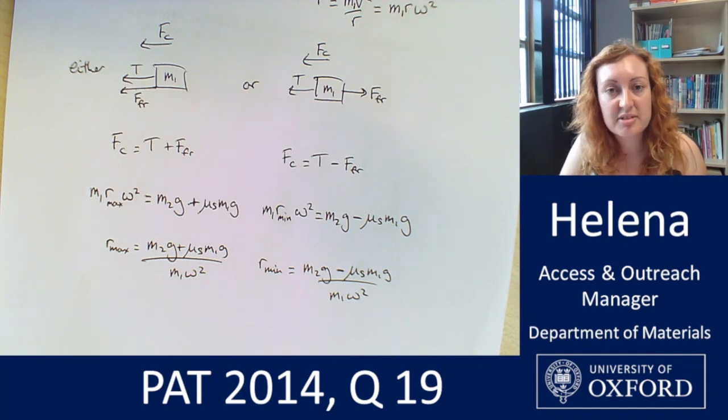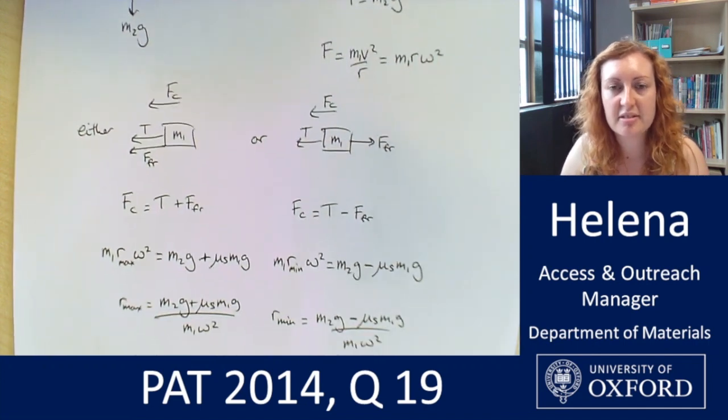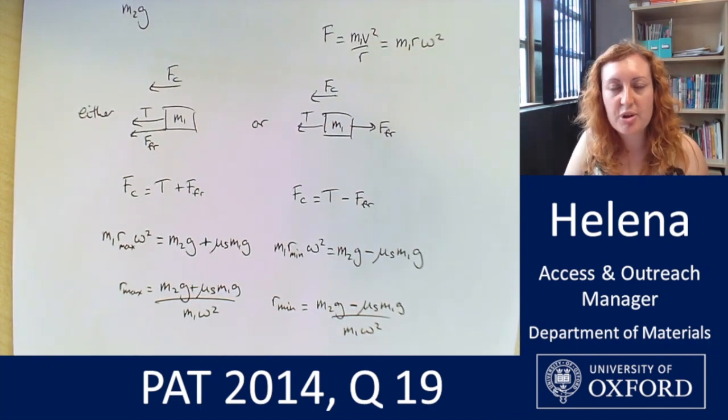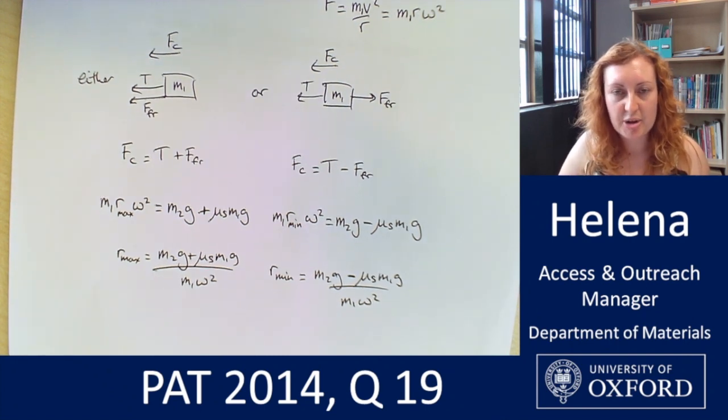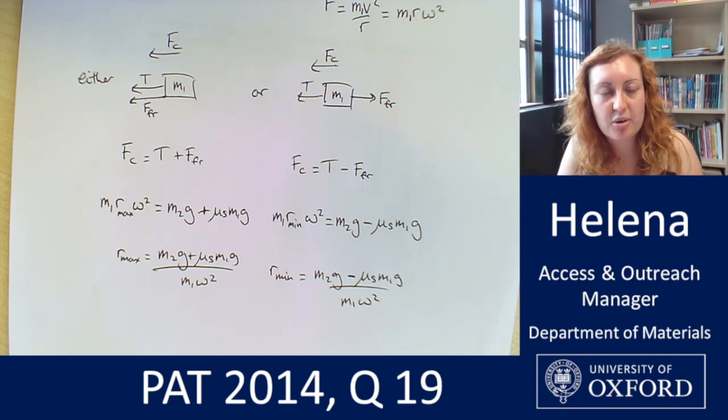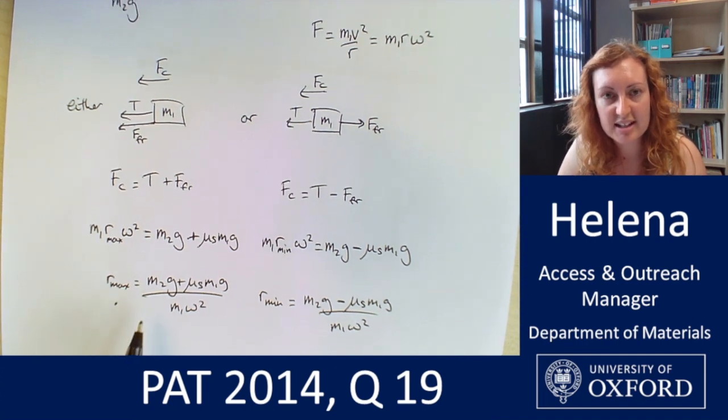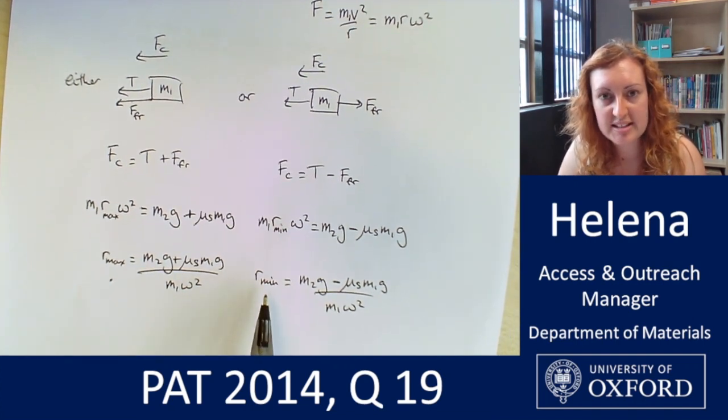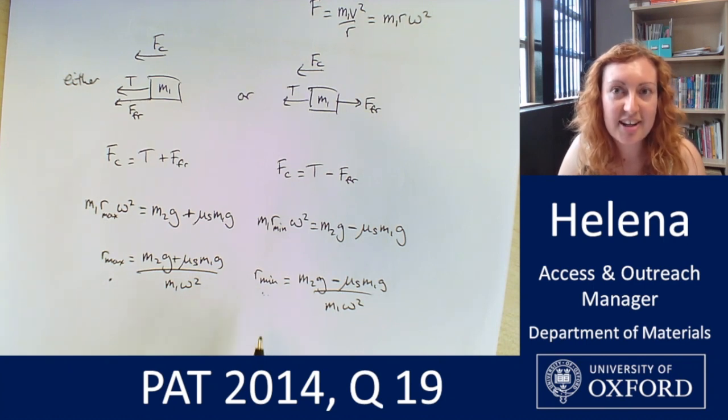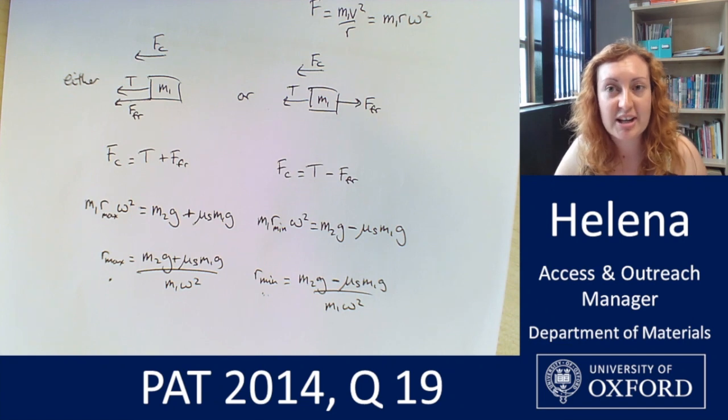So those are our extremes for our radius, for that distance between the block and the central axis of rotation. And in between those two values, we're not going to get any acceleration. We're not going to get any motion. So depending on where we place our block, r1 is going to determine whether we get motion or not in that radial direction. If we place our block further out, further away from the hole, greater than r_max, we're going to get some acceleration. And if we place it further in than r_min, we're also going to get some acceleration. It just depends on which direction our frictional force is going to be acting in those two scenarios, which determines which direction that acceleration is going to be.